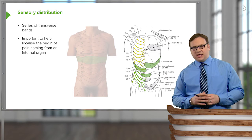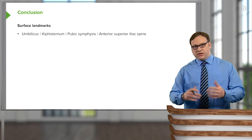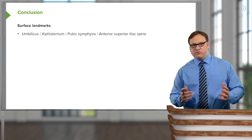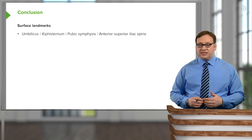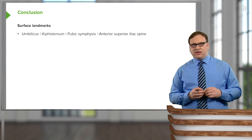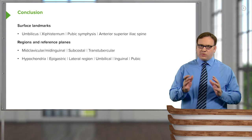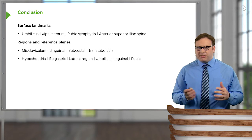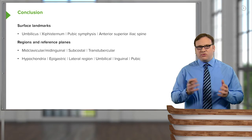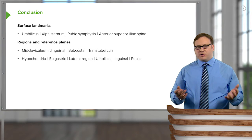It's important to understand where these organs refer their pain to the surface of the abdomen, and we'll explore this in later detail towards the end of this course. In conclusion, in this initial introductory surface anatomy lecture, we've looked at numerous surface landmarks like the umbilicus, the xiphisternum, pubic symphysis, and the anterior superior iliac spine. We've then used these regions to locate specific reference planes like the mid-clavicular, mid-inguinal plane, subcostal, and trans-tubercular.